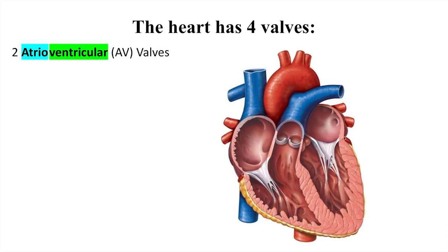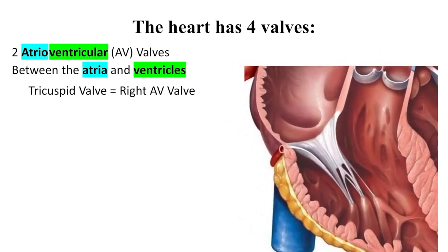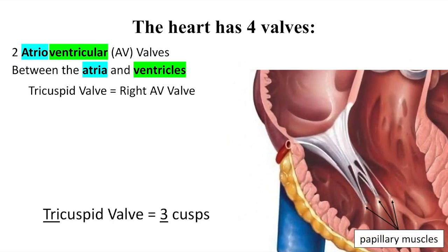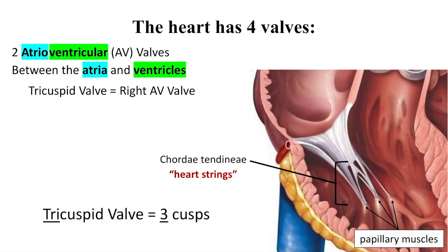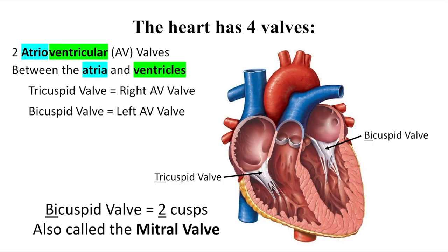Four valves enforce a one-way blood flow through the heart chambers. The atrioventricular valves, or AV valves, are located between the atrium and the ventricle on the left and right side of the heart. The tricuspid valve, also known as the right AV valve, has three flap-like cusps anchored to the papillary muscles of the ventricular wall by cords called chordae tendinae, which literally mean heartstrings. The bicuspid valve, also known as the left AV valve or the mitral valve, has two flap-like cusps anchored to the papillary muscles by chordae tendinae.